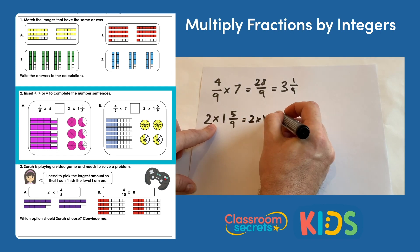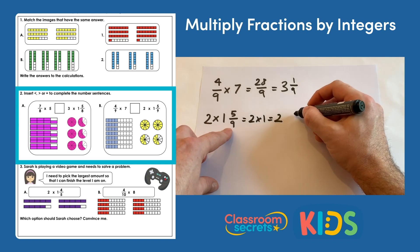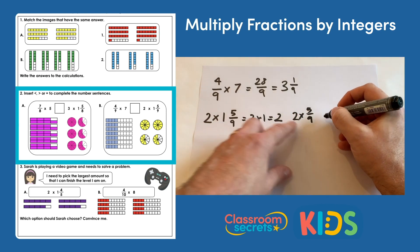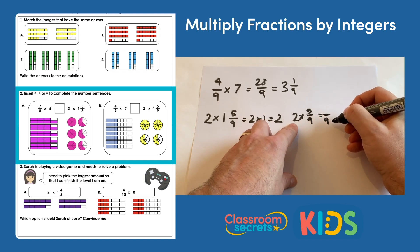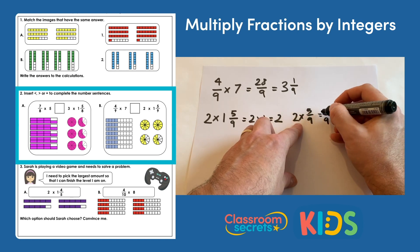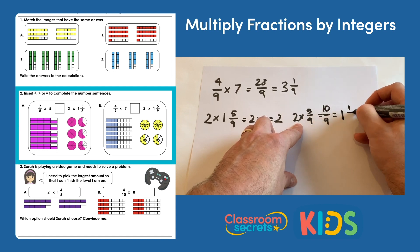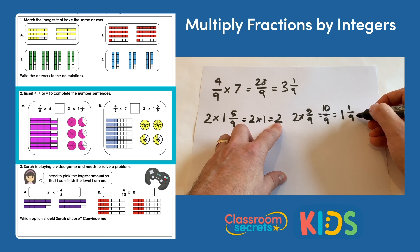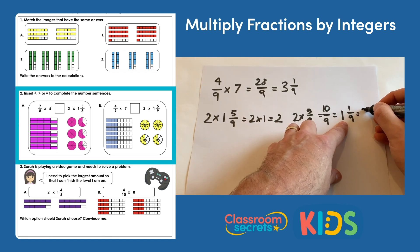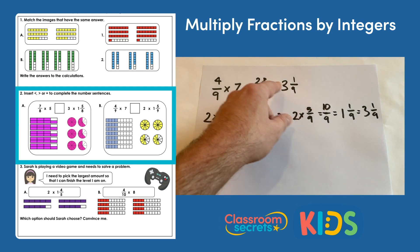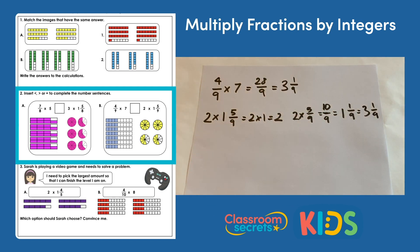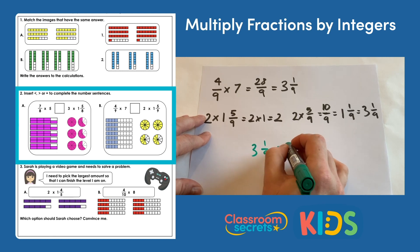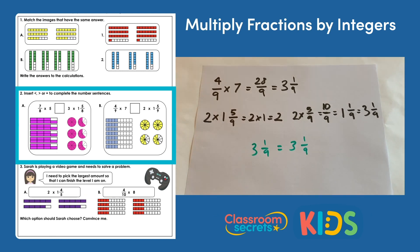For two multiplied by one and five ninths, multiply the whole numbers first: two multiplied by one is two. Then multiply the fraction: two multiplied by five ninths gives ten ninths, which is one and one ninth. Adding that to the whole number: two add one and one ninth makes three and one ninth. Both calculations give three and one ninth, so the answer is equal to.